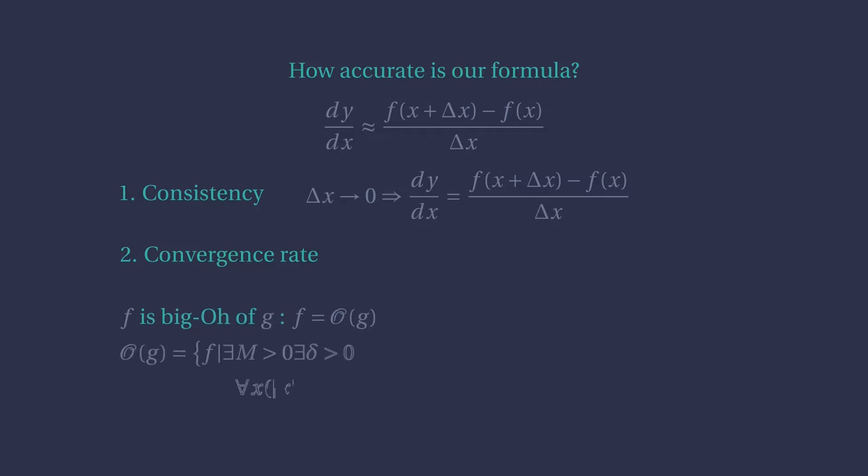You probably have seen it around. It is widely used in computer science to tell us how the number of operations in an algorithm grows with the number of elements. In our case, it roughly means that as x goes to zero, after some point, f is always smaller than g.